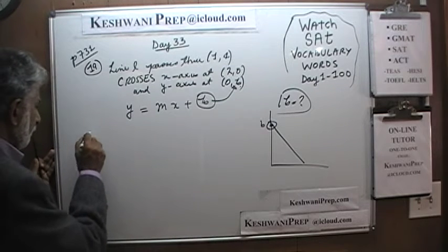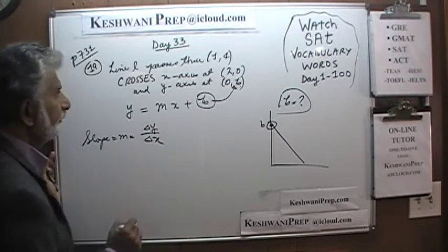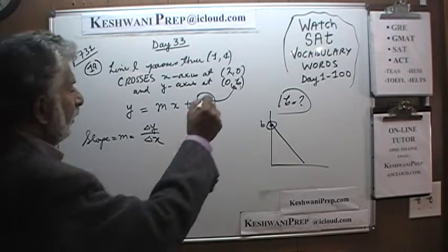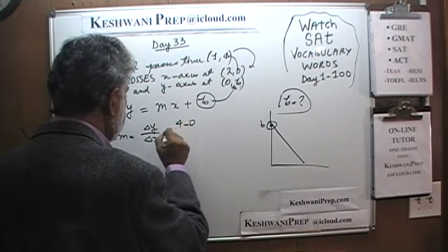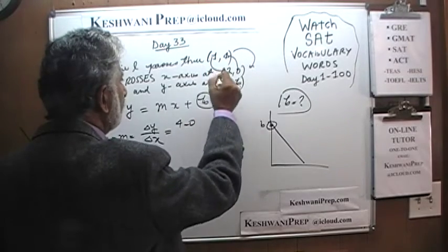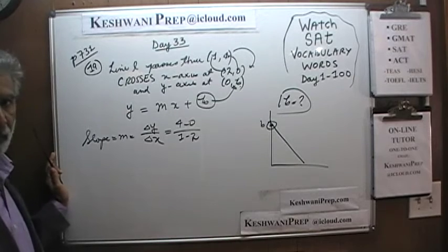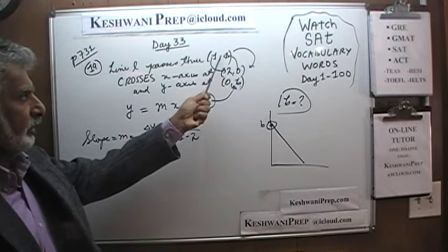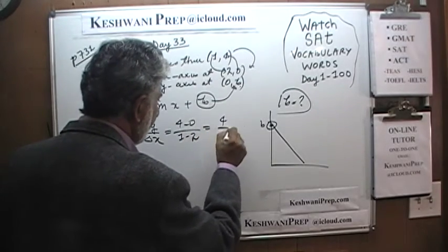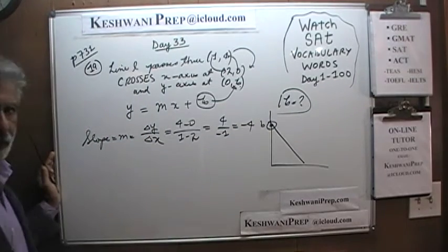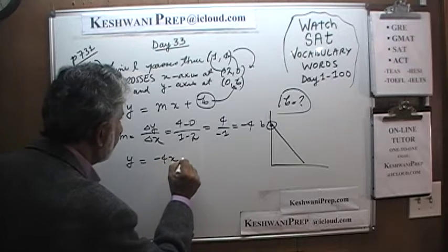Let's first find out the slope. Once we have the slope, we can make progress. To find the slope, we need coordinates of two points the line passes through — we know it goes through (1, 4) and (2, 0). Slope m equals change in y over change in x: that's 4 minus 0 over 1 minus 2, which is 4 over negative 1, so the slope is negative 4.